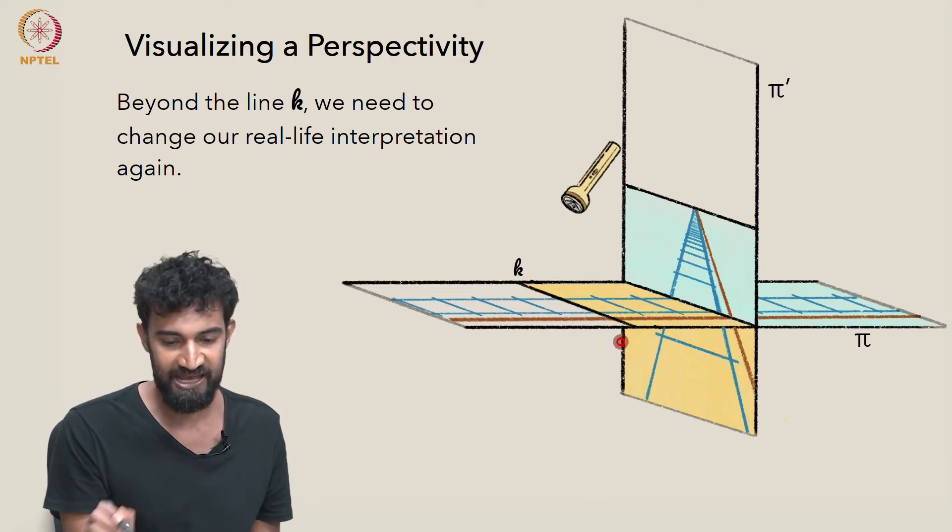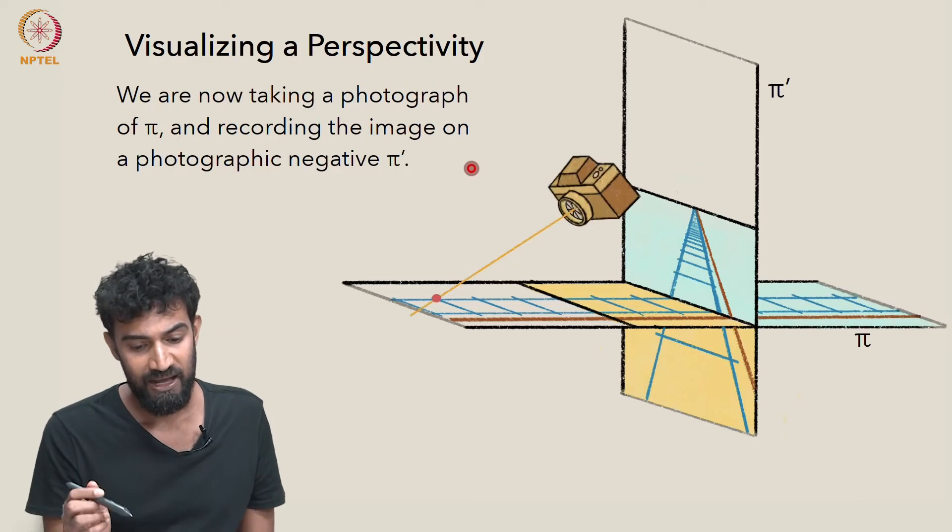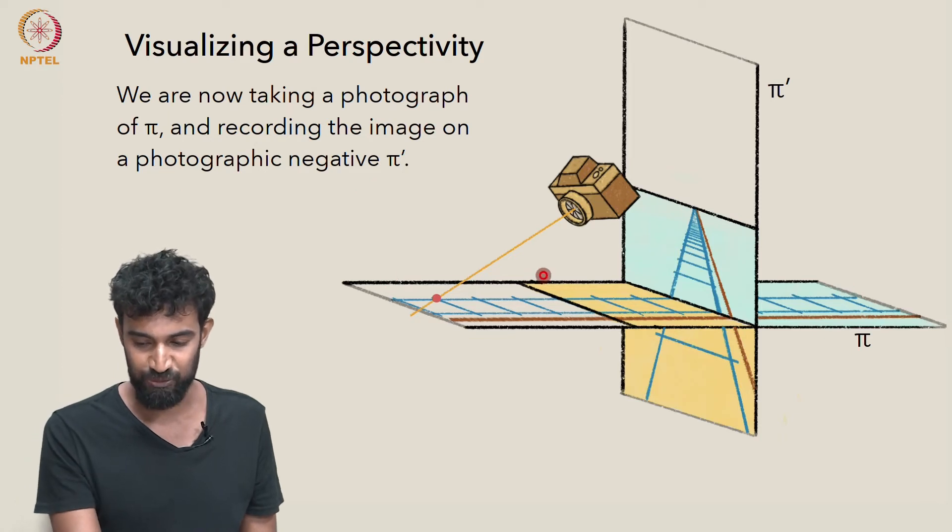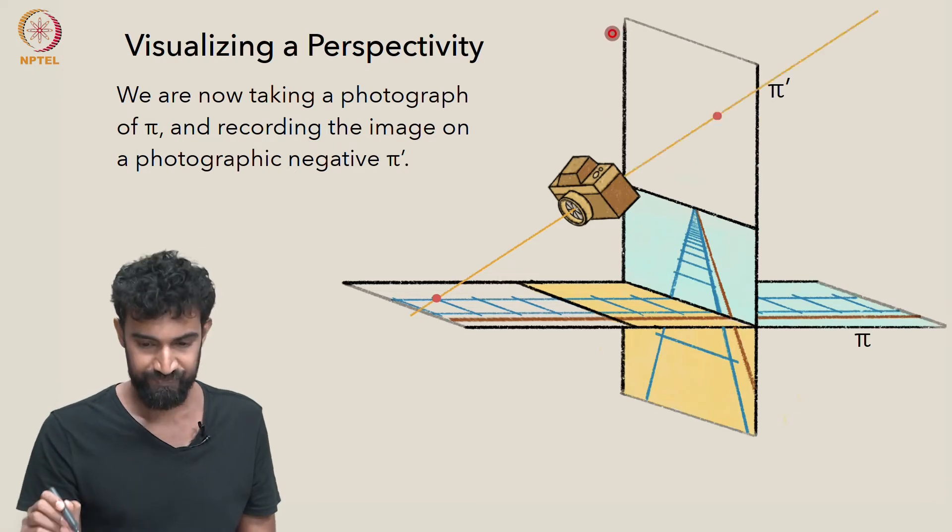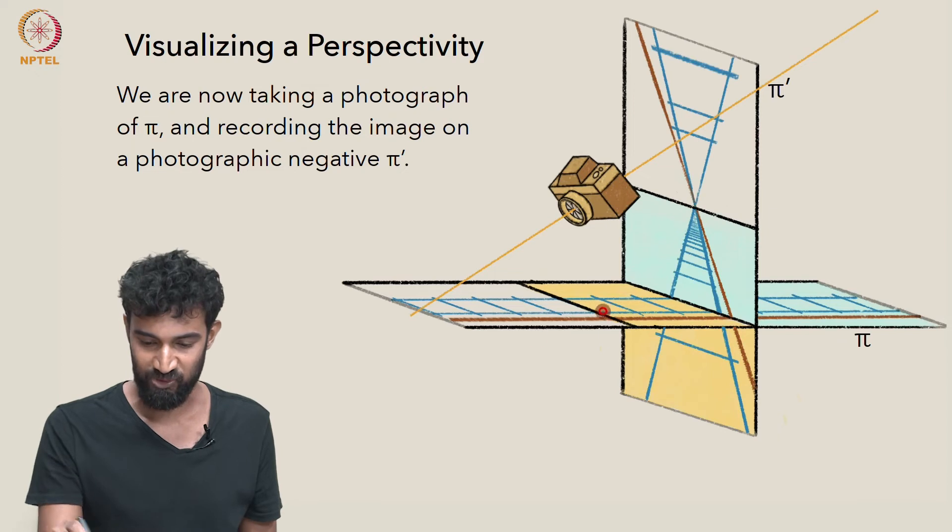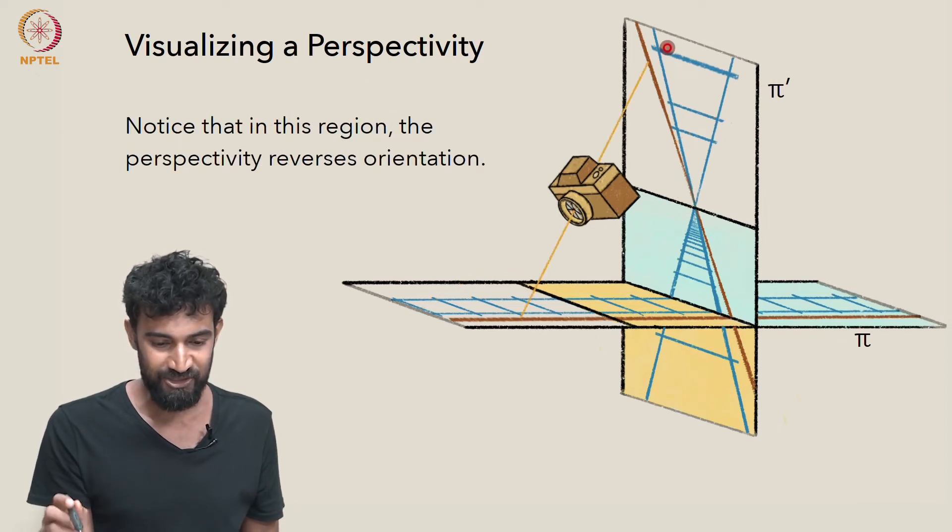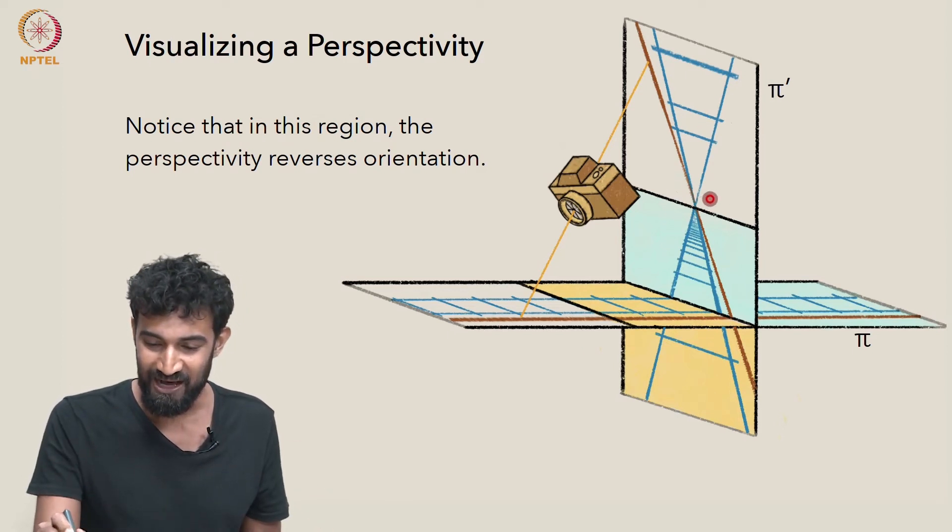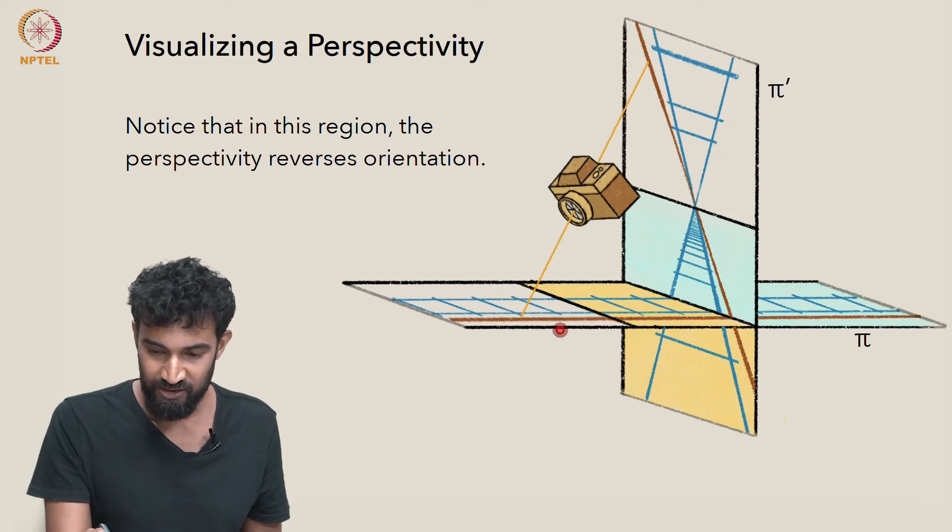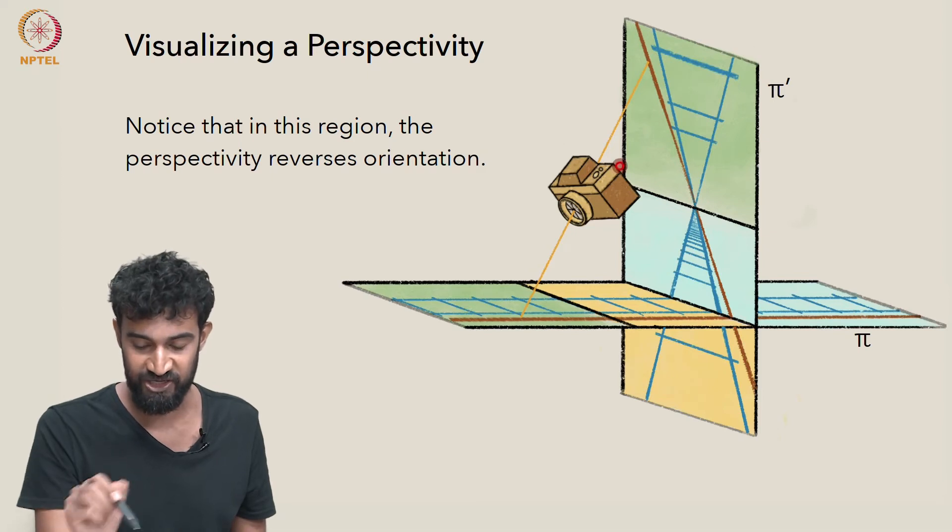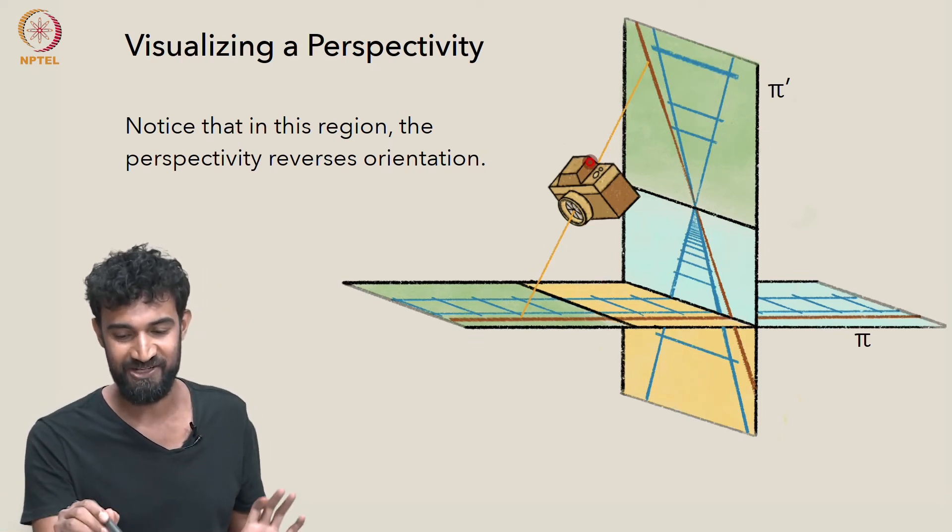Now beyond the limit, beyond the line k, we need to change our real life interpretation again. And suddenly, we're not doing shadow projection, we're taking a photograph and recording the image on a photographic negative. So we're taking a photograph of the ground plane pi and recording the image on this photographic negative pi prime. So like this point here is going to map to this point here, this point here is going to map to some point over there, and so on. And you might notice that in this region, the perspectivity seems to be reversing orientation, at least from our R3 vantage point. So this brown line over here is suddenly on the other side of the railway tracks here. It's always on the right side in all of these, in this image, but suddenly here it's on the left side. So we've reversed orientation when we've gone from this region to this green region here. So this is a third region, and in this case both actually seem infinite in both pi and pi prime.